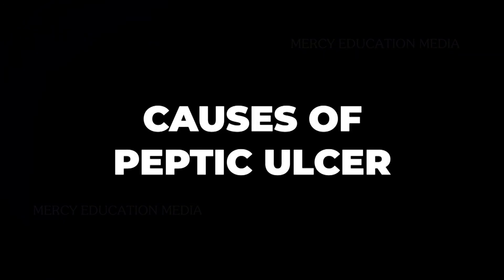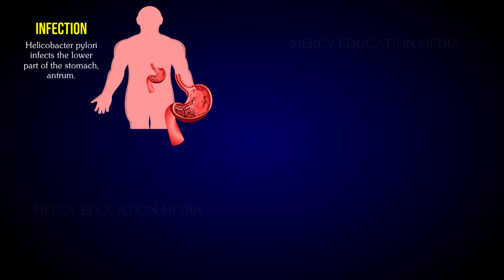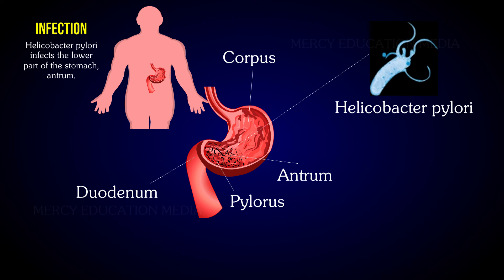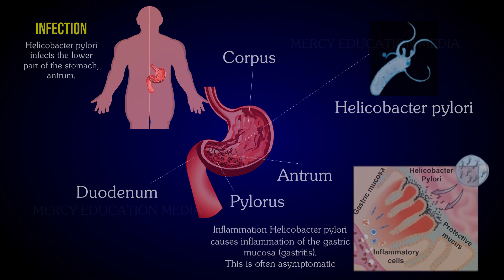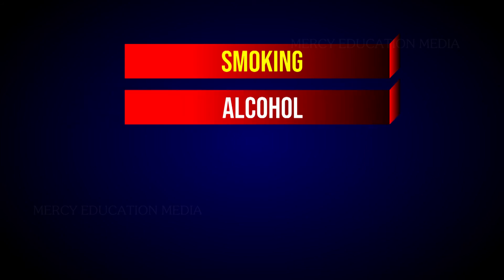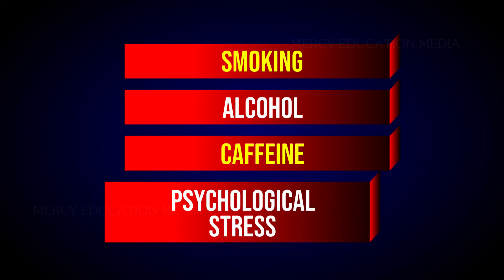What are the causes of peptic ulcer? The ulcer is mostly due to infections by a bacterium called Helicobacter pylori. Uncontrolled usage of aspirin or certain anti-inflammatory drugs such as ibuprofen causes peptic ulcer. Other causes include smoking, alcohol, caffeine, and psychological stress.